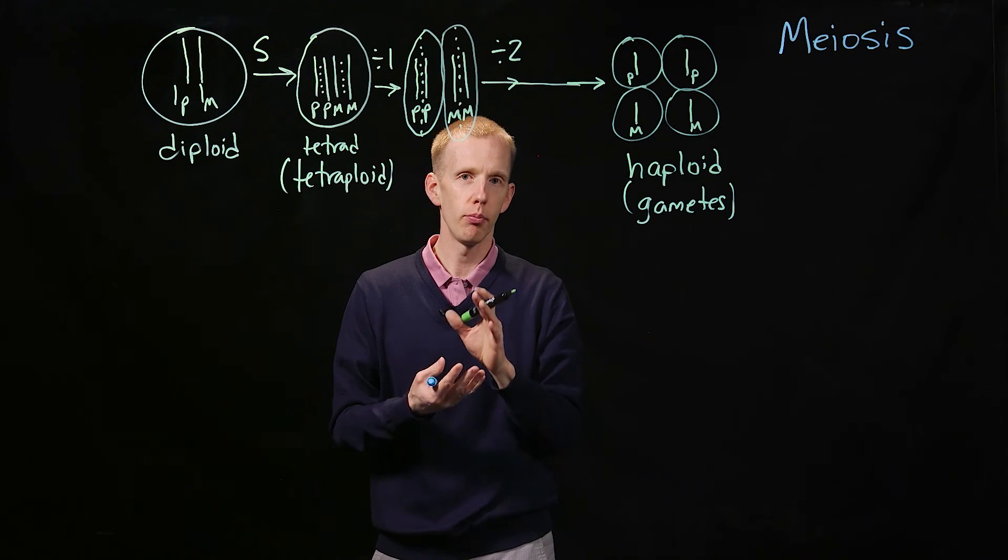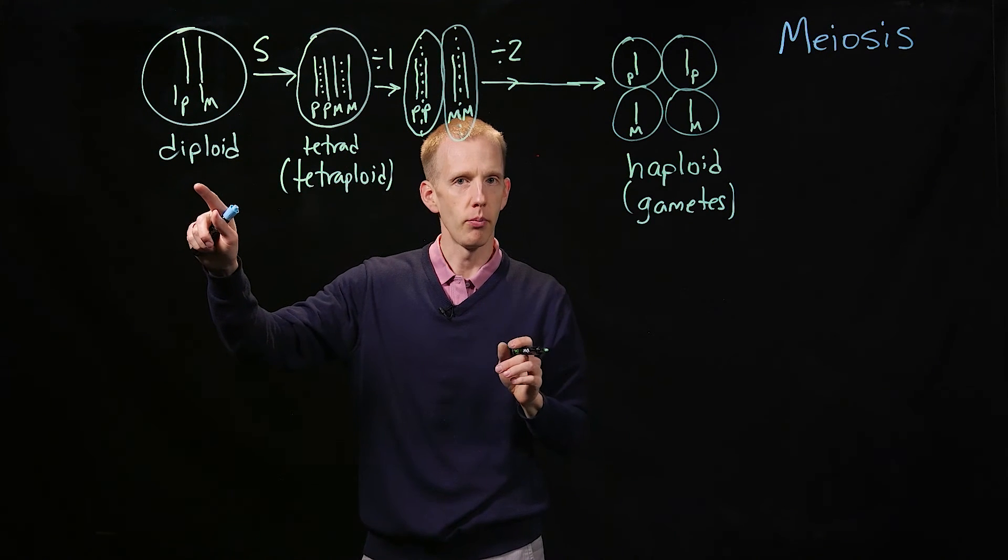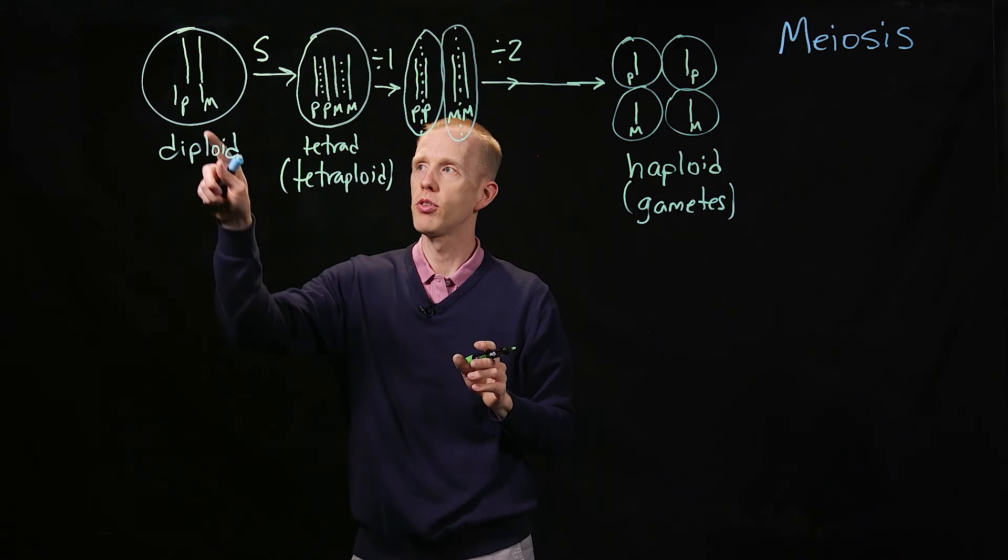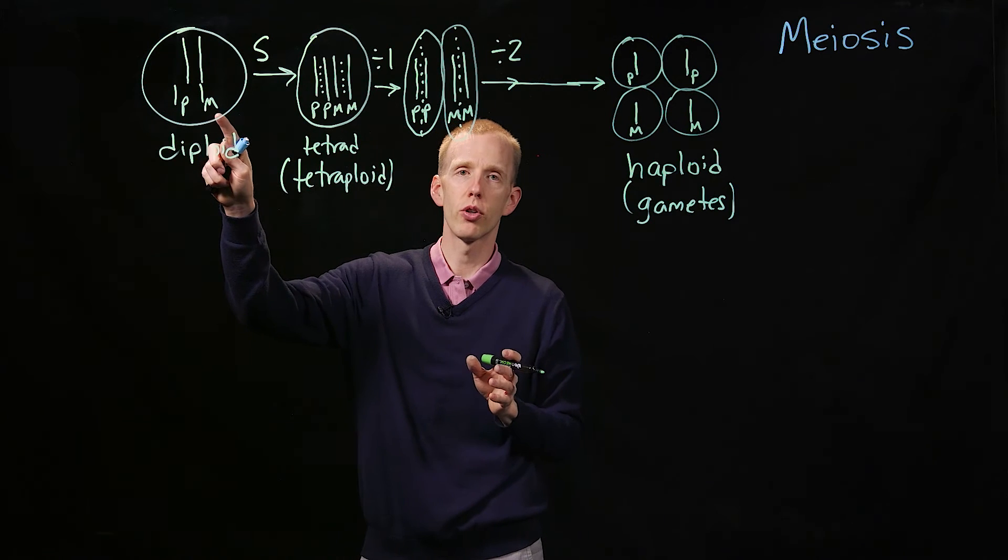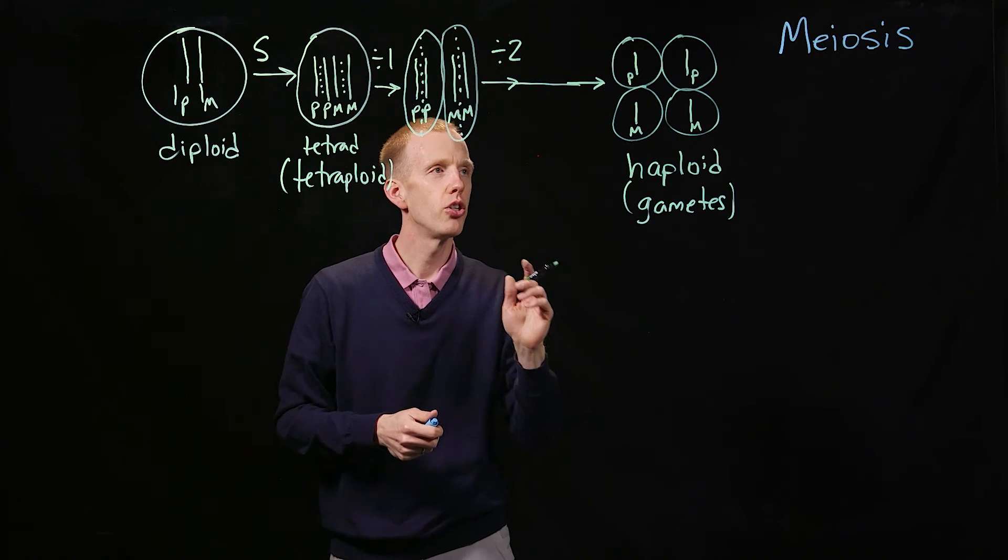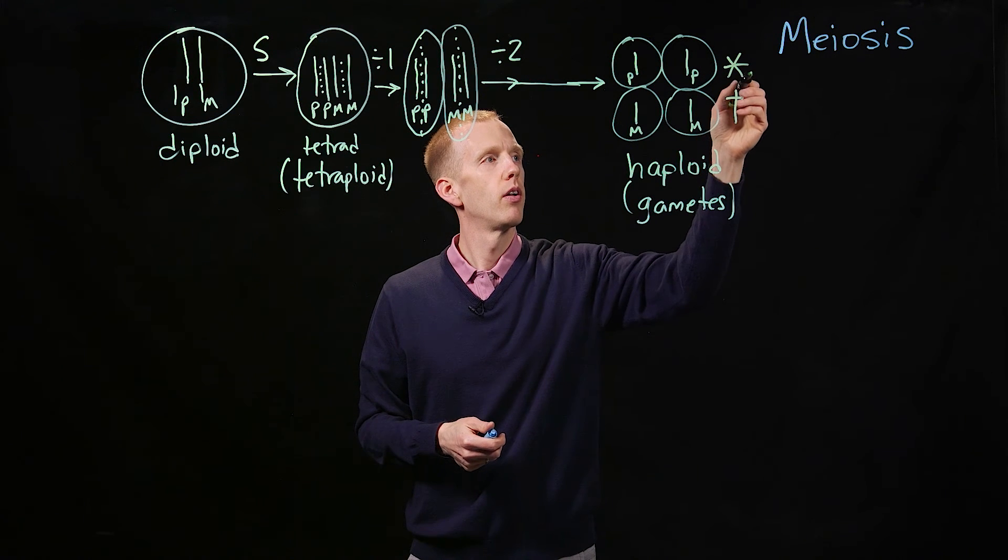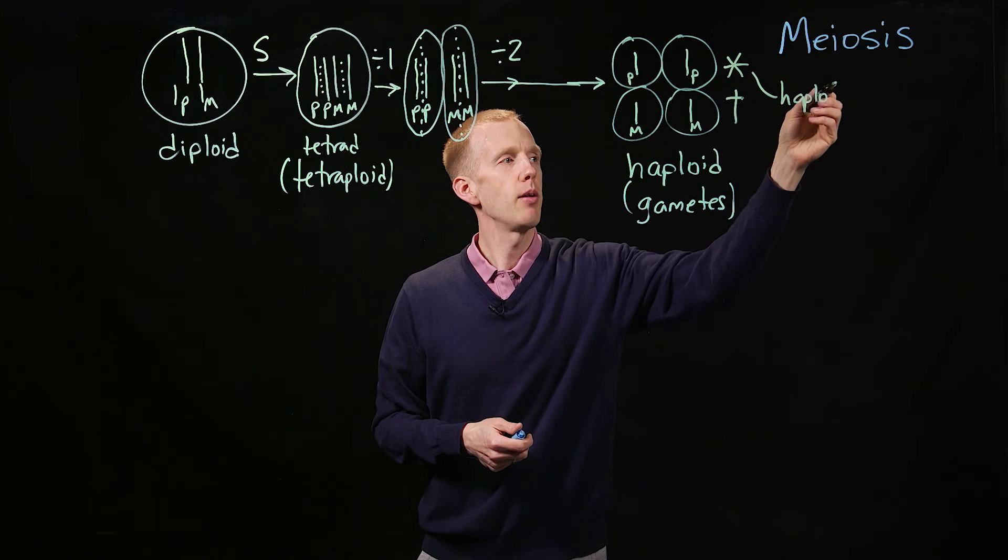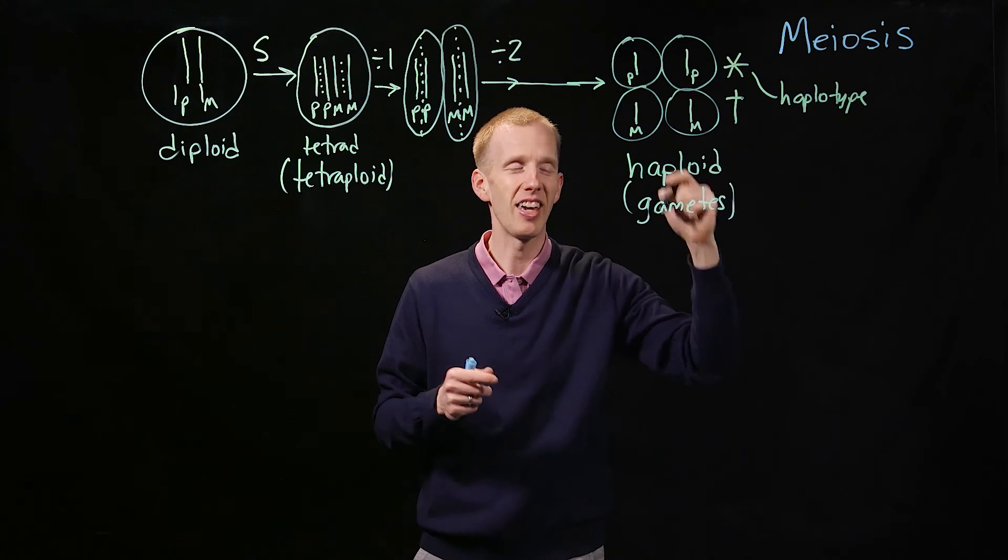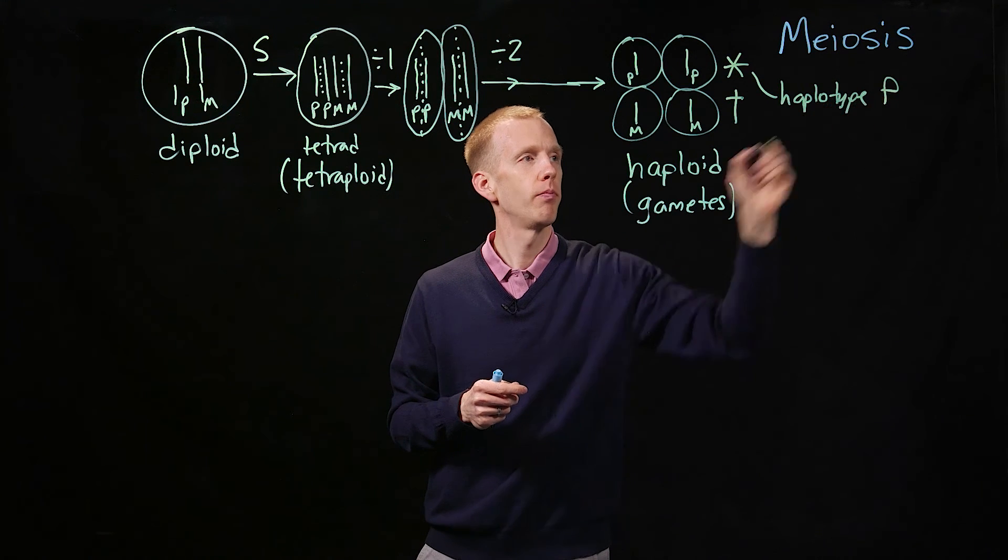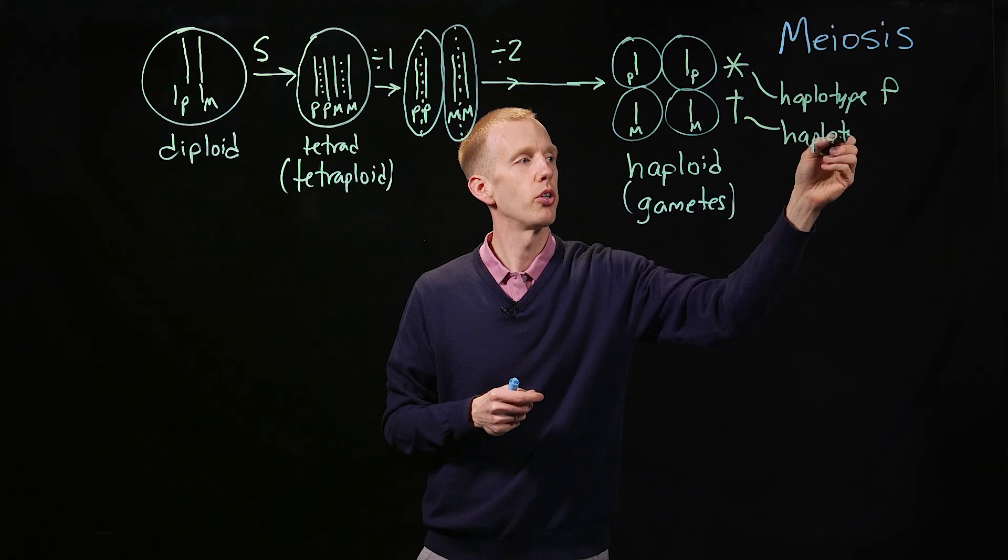A really important point to take away from this model is that if you're a diploid organism, you can only have two alleles of each chromosome. You have a paternal version, you have a maternal version, which means you can only have two types of haplotypes. You can have the haplotype, which is the genotype of a haploid gamete, that's paternal, and you can have the haplotype that's maternal.